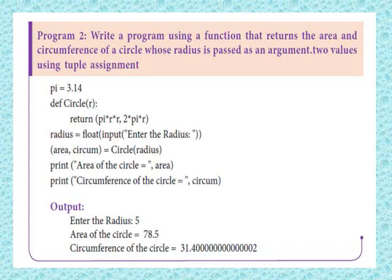Print 'area of the circle =' with the output variable area, then print the circumference with variable circum. With radius input as 5.0, the area of the circle is 78.5 and the circumference is 31.4.